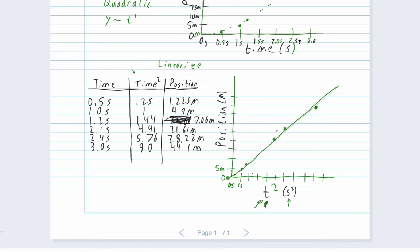At 1.2 seconds, we're actually at 1.44 seconds squared and we're at that 7 meters which is about right here. Then at 2.1, we're at 4.441 seconds. We're at 21.6. So that's going to be about right there. Did I do that right? Oops, sorry. Should be a little bit lower. About there.